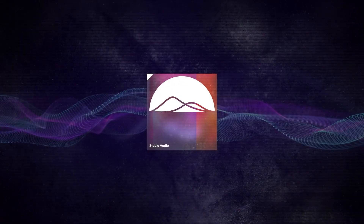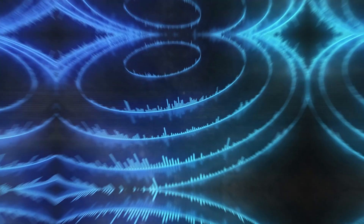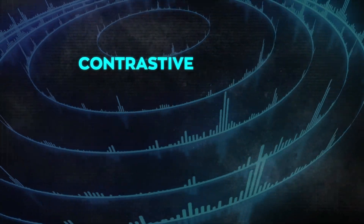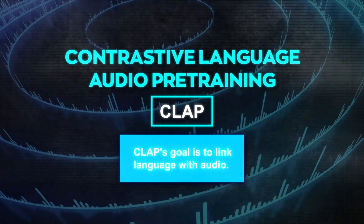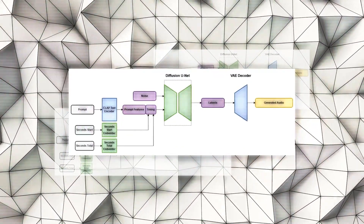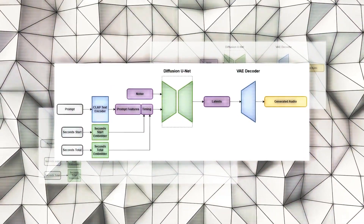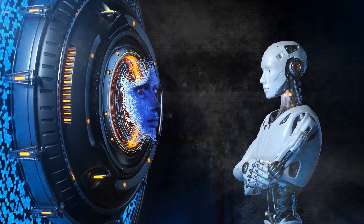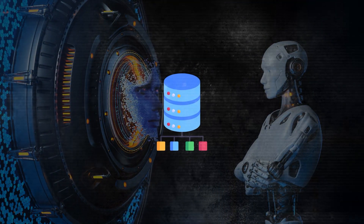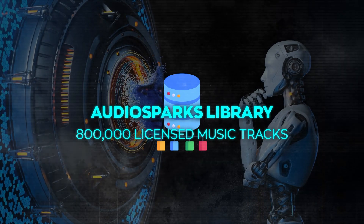But how does Stable Audio decide the sound based on a text prompt? This is the exciting part. It employs a method named Contrastive Language Audio Pre-Training, or CLAP for short. CLAP's goal is to link language with audio. It uses two encoders and a special learning target to pair audio and its textual description, learning to match words with their corresponding sounds. For training CLAP, Stability AI utilized a vast dataset from the AudioSparks library, which has over 800,000 licensed music tracks.